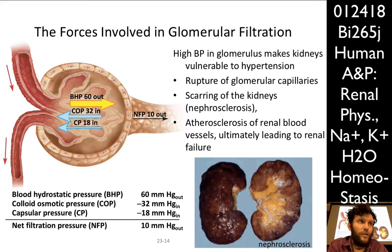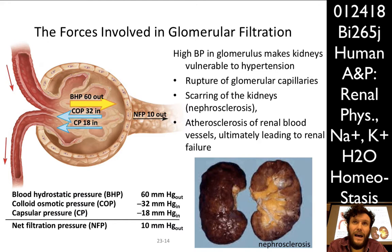If you have too high blood pressure, this is going to make what are extremely delicate capillaries prone to rupture. If you have chronic high blood pressure, your kidneys are liable for damage — you can rupture these glomerular capillaries. If that happens, you get nephrosclerosis, or scarring of the kidneys.